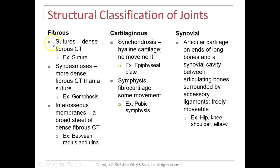We're going to look at sutures for fibrous joints, syndesmosis, and interosseous membranes — three major classifications of structurally classified fibrous joints. The cartilaginous joints include synchondroses, where hyaline cartilage is the adjoining connective tissue and no movement is allowed, and symphyses, where a pad of fibrocartilage is between the adjoining bones.